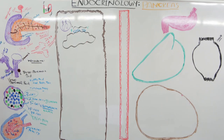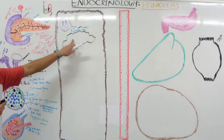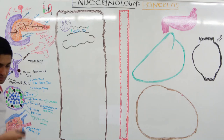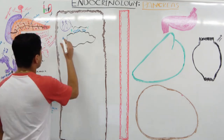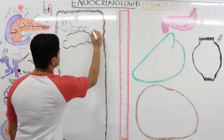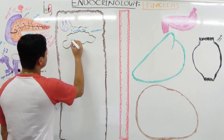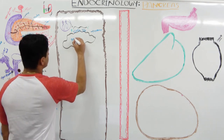Special receptors on the rough ER recognize the signal sequence. Endopeptidase enzymes located there cleave the signal sequence and bring the compound inside. When the signal sequence is cleaved, it no longer becomes pre-proinsulin — it becomes proinsulin.